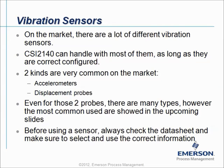On the market there are a lot of different vibration sensors. The CSI 2140 Machinery Health Analyzer can handle most of them as long as they are correctly configured. Two kinds are very common: accelerometers and displacement probes. But even for those two probes there are many types. Before using a sensor, always check the datasheet and make sure to select and use the correct information.